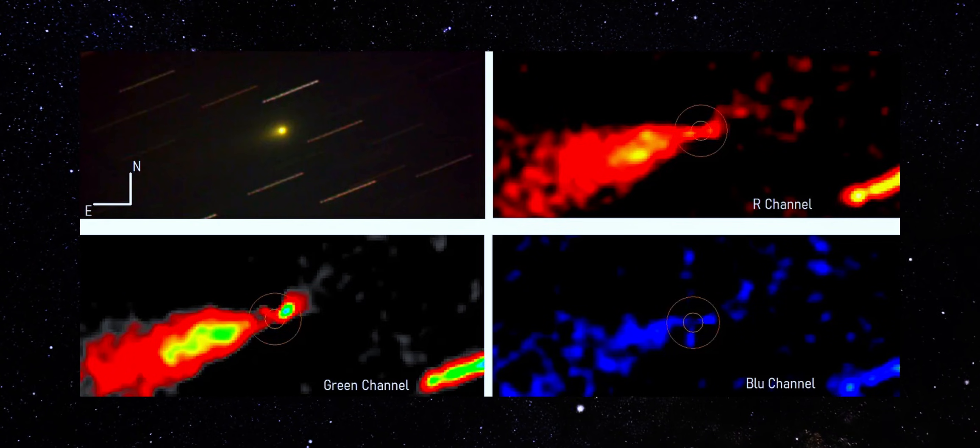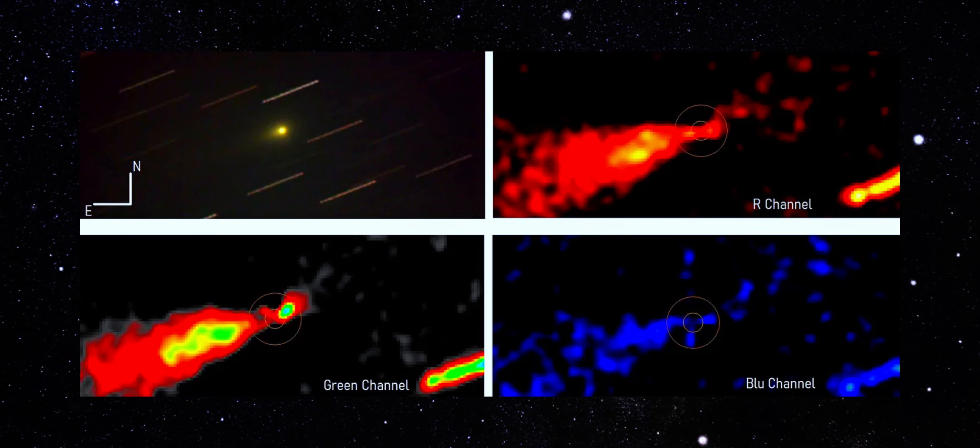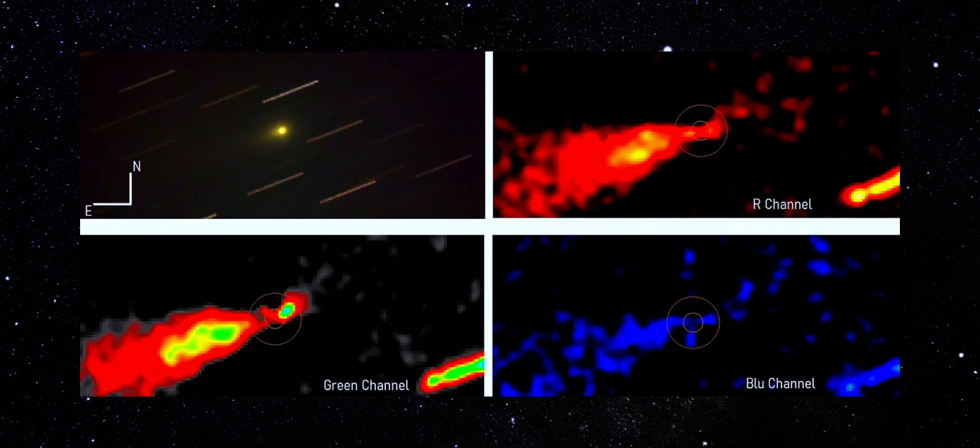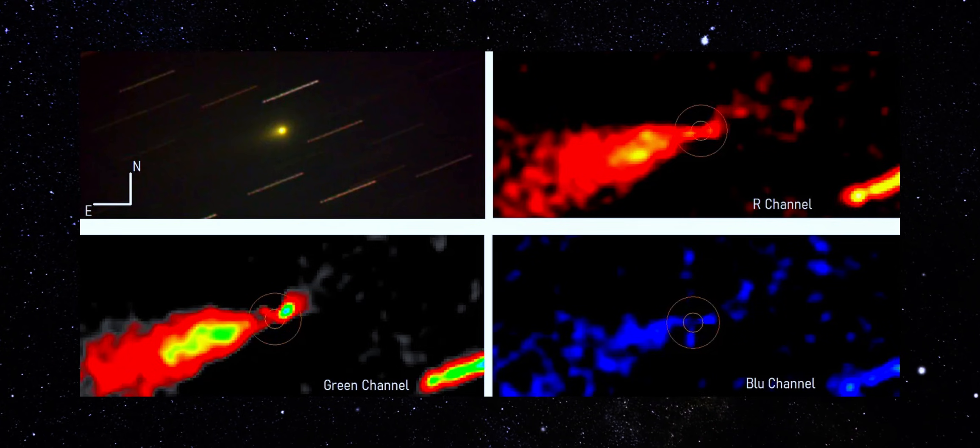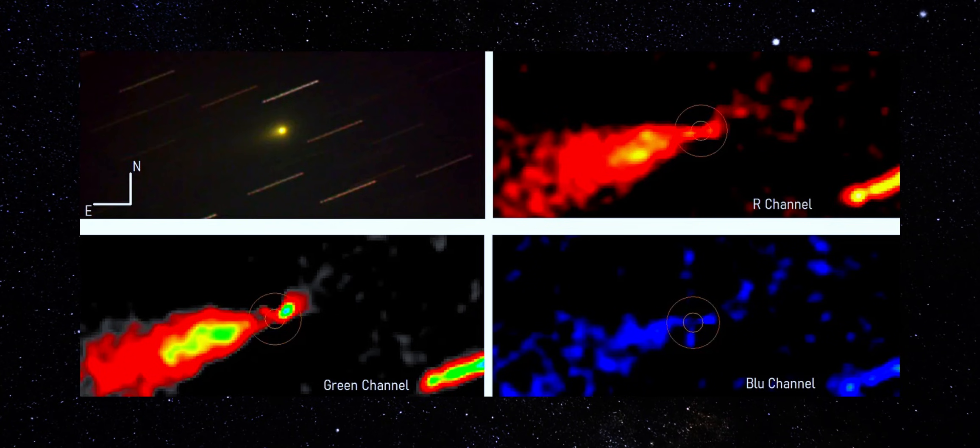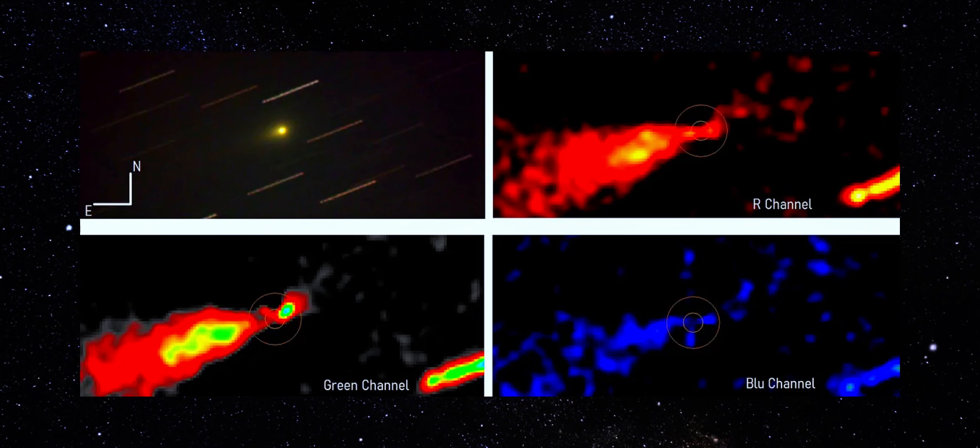Now the blue channel. This is usually where structure falls apart first. Shorter wavelengths amplify noise. But even here, the extension doesn't vanish. It weakens, but it doesn't rotate, scatter, or randomize. Three channels. Different wavelengths. Different processing paths. Same direction.